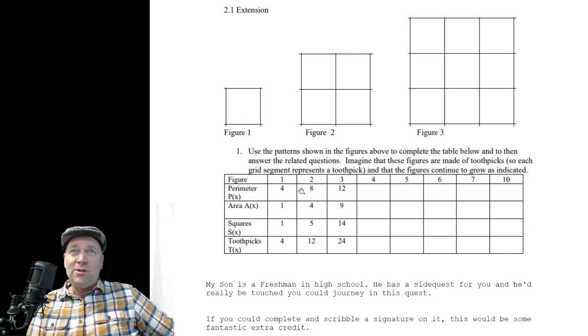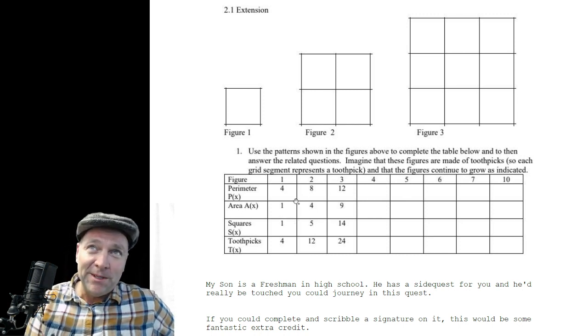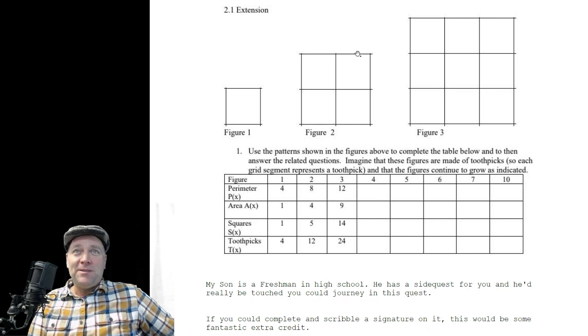So you can see this chart here as you double in size exponentially or whatever the fancy mathematical word is. Now this has a perimeter of eight toothpicks, and so on and so forth.